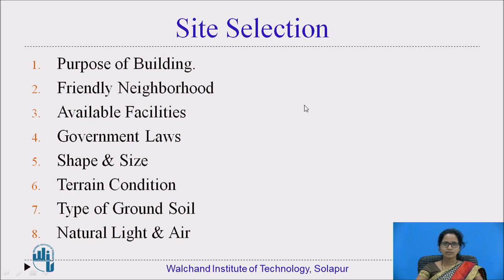Available facilities: the site should have nature's gifts such as sunlight and air flow for ventilation. Regarding government laws, the site should come within the limits of the area where the bylaws of the locality are authorized and enforced. These bylaws set restrictions regarding the proportions of the plots to be built upon, and the vacant spaces to be left on the sides and front.